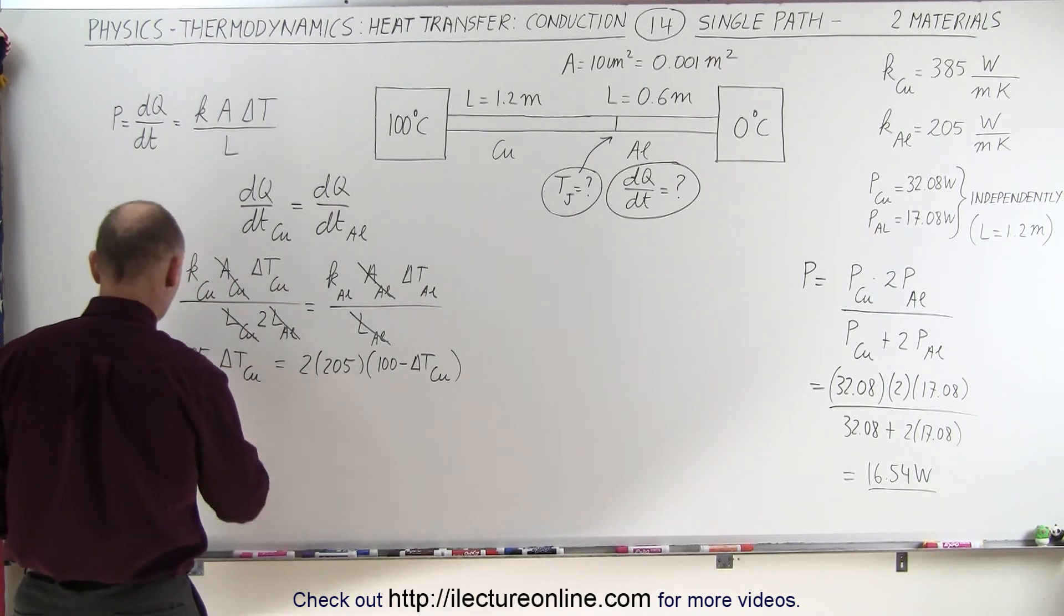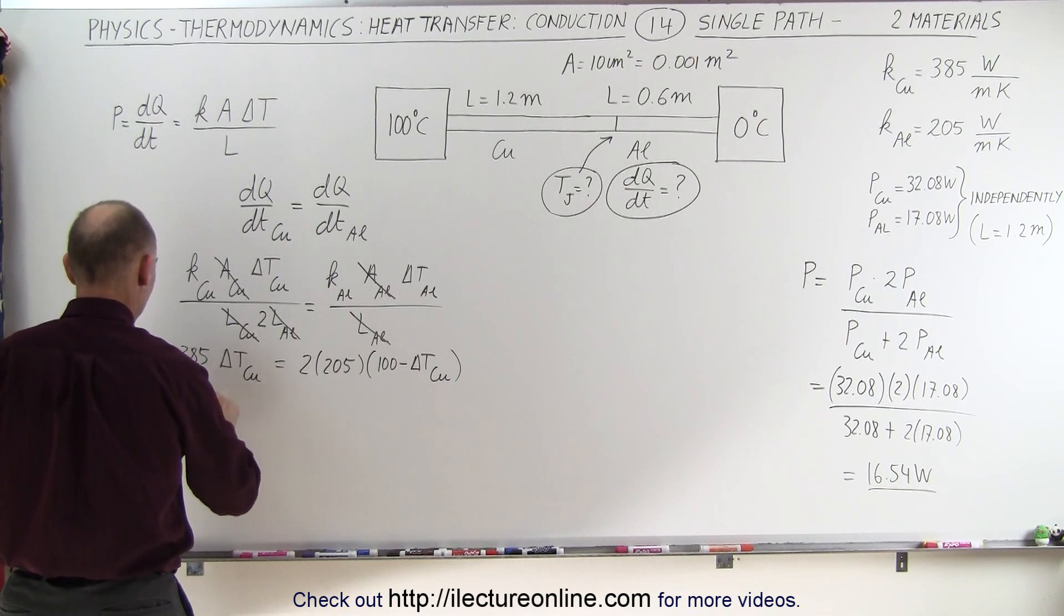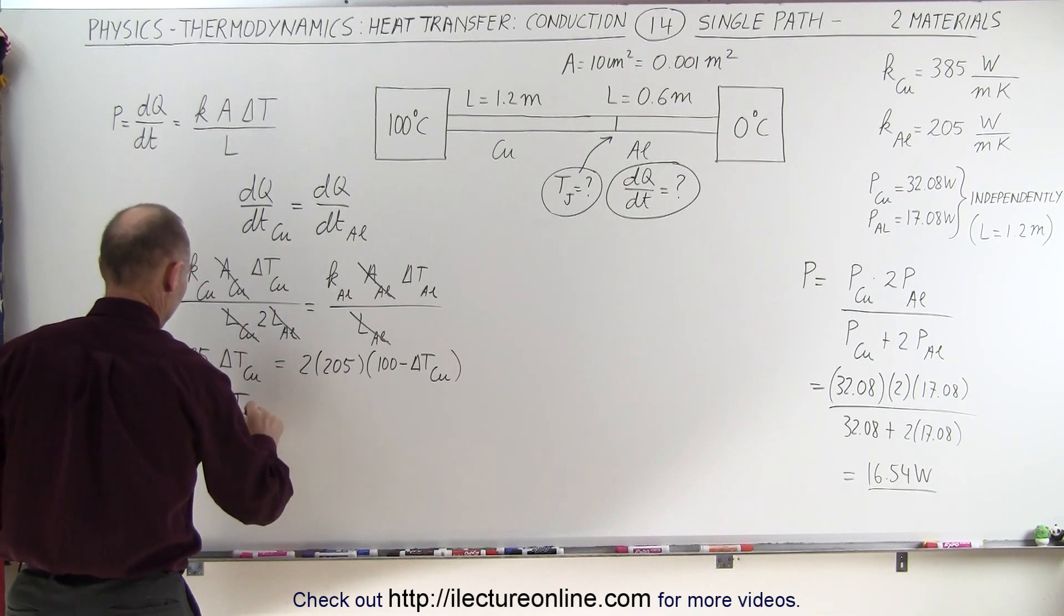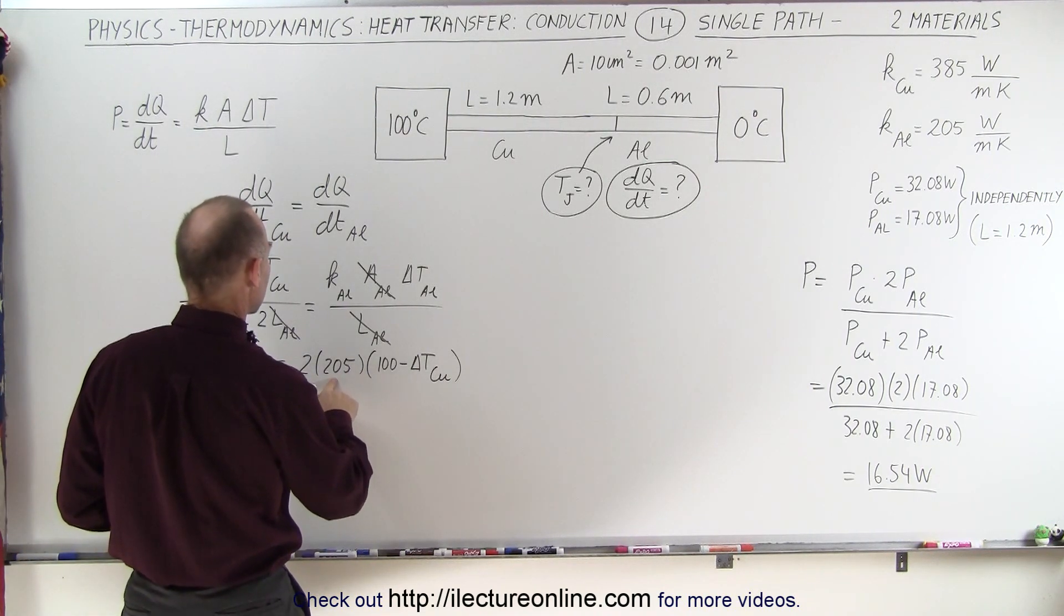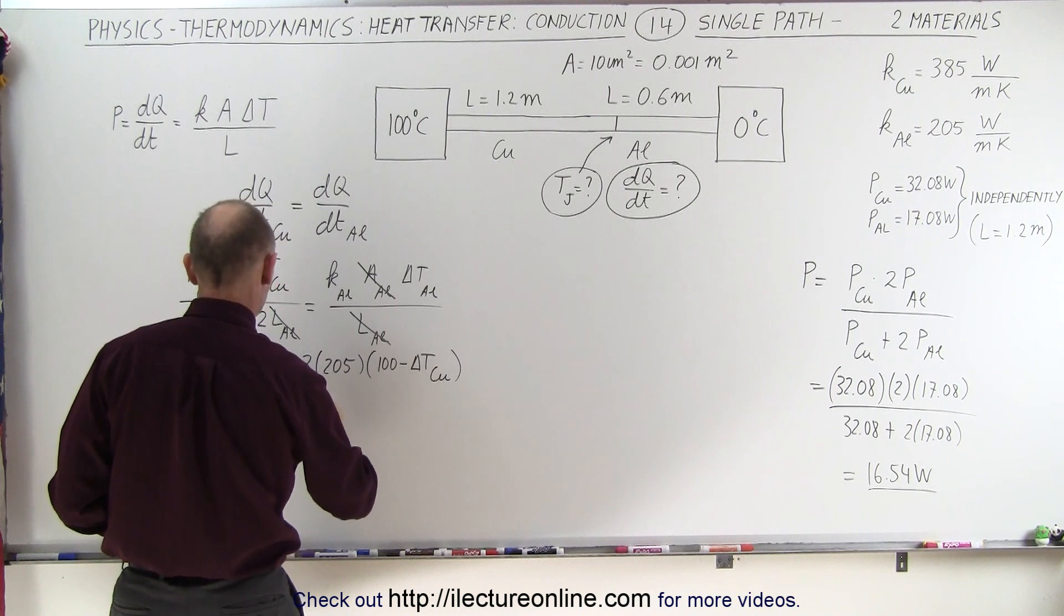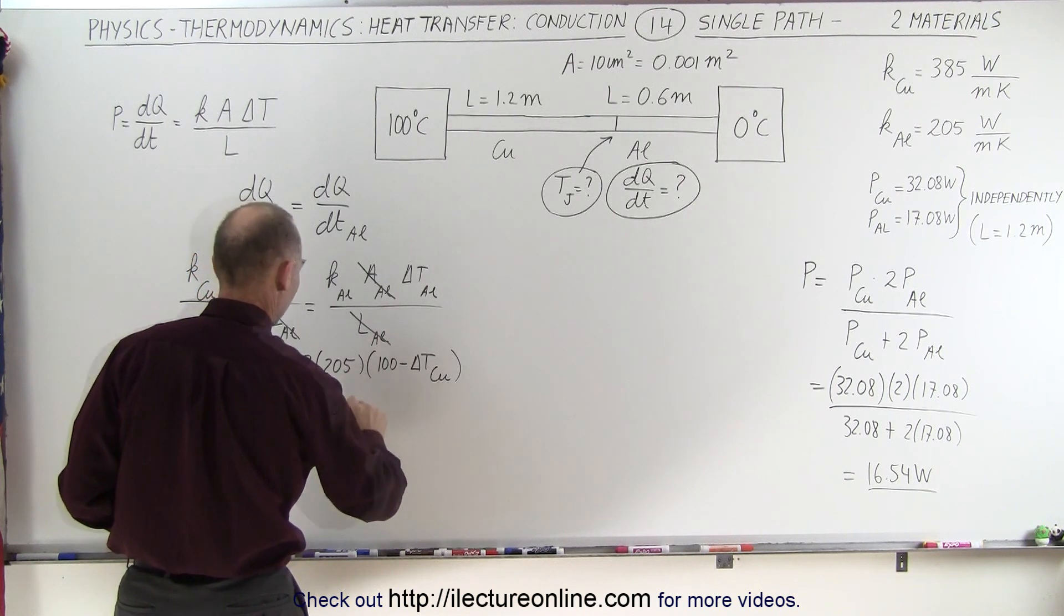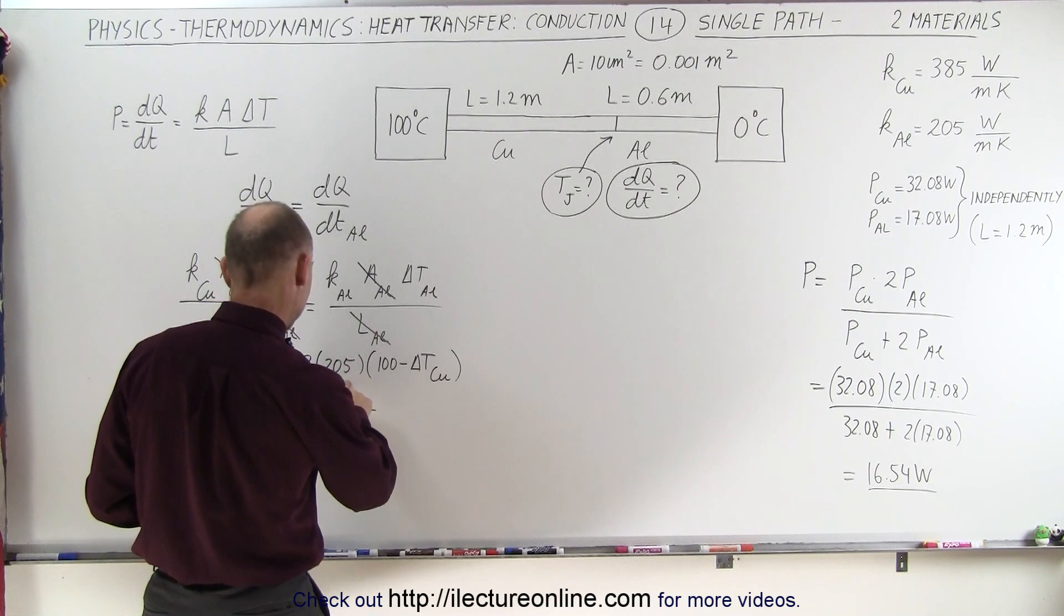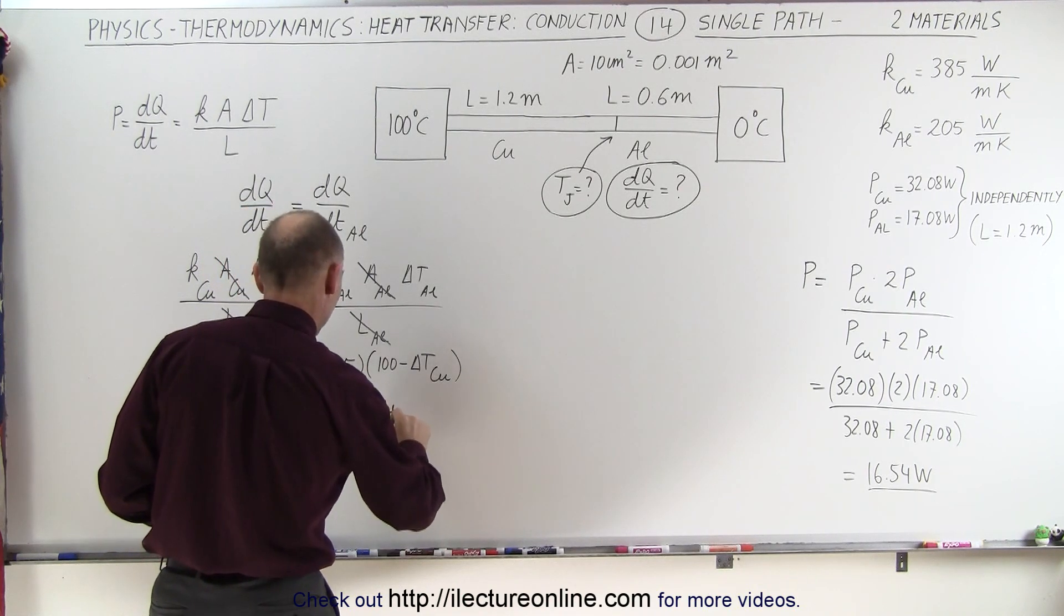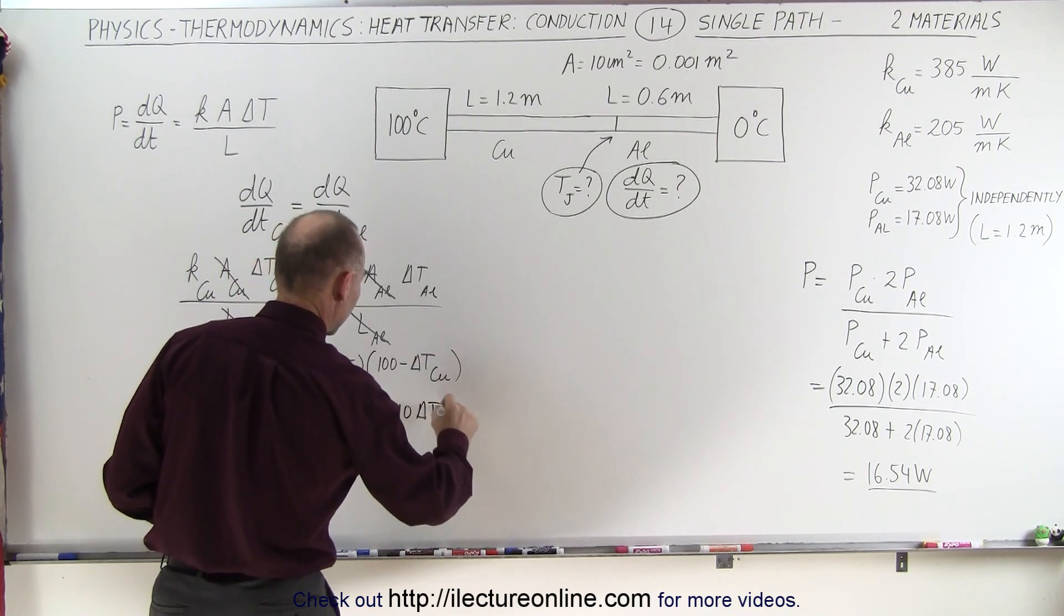We're simplifying this, we get 385 times the delta T of the copper equals two times that, that would be 410 times 100, that would be 41,000 minus 410 times delta T of the copper.